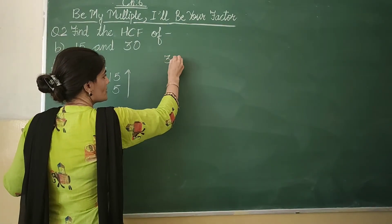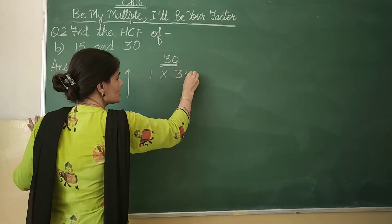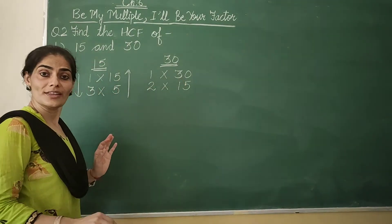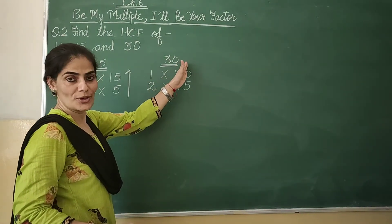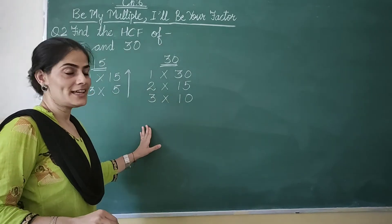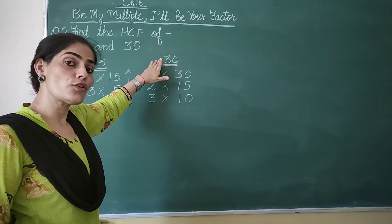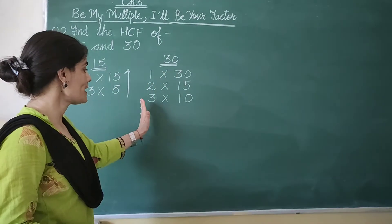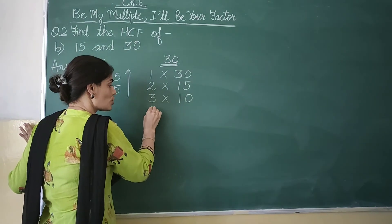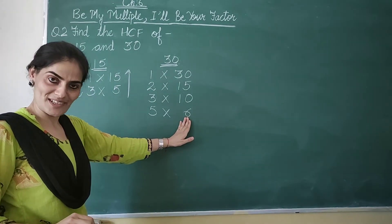The next number is 30, so let's write the factors of 30. We begin with 1 — 1 into 30 gives you 30. As it is an even number, 2 will be its factor — 2 into 15 gives you 30. Next is 3: 3 plus 0 is 3, which is divisible by 3, so 30 is also divisible — 3 into 10 gives you 30. Next is 4: we get 4 sevens are 28 and 4 eights are 32, so 4 is not a factor of 30. Next is 5: since this number ends in 0, 5 will surely be its factor — 5 sixes are 30. Next is 6, which we have already written. Repetition — so we stop.